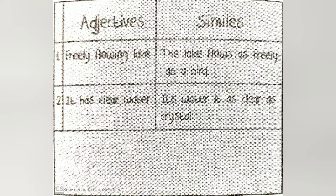We use adjectives to describe things. But similes help us to make the description even more precise, which makes it easier for the reader to create an image in their mind. For example, 'it flies like a flash' helps us to imagine how quickly the bird must fly to catch the fish.